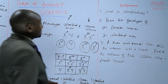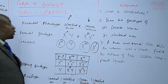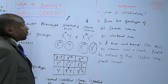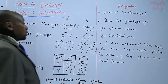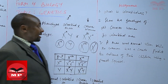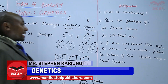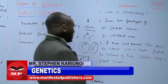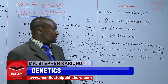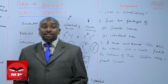For the assignment: one, what is color blindness? Two, show the genotype of a carrier woman and a colorblind man. Three, a man who had normal vision while the woman was a carrier — predict the outcome of their children using a Punnett square. We'll stop there until next time. Goodbye.